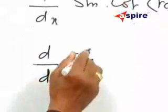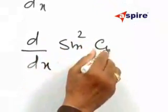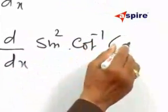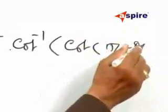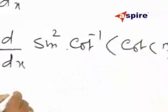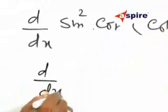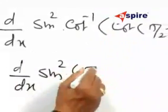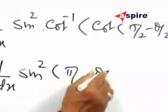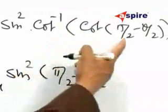Cot inverse of cot theta by 2 minus theta by 2. And that is d by dx of sin squared theta by 2.